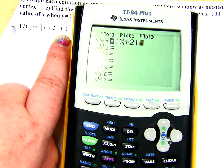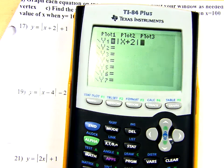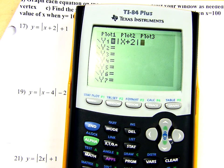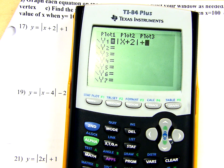So make sure that you're out of the absolute value, or if you have a black calculator, anything you want in the absolute value bars has to be in between the parentheses. So close your parentheses after you type X plus 2. And then outside of it, I type plus 1.